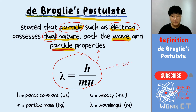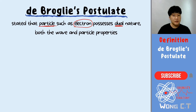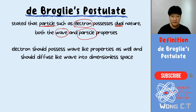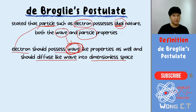We are not going to do any calculations, so don't worry about the formula — we are going to understand the postulate only. In Bohr's atomic model, we agree the electron is a particle. When the electron is a particle, it must have the dual nature properties — wave and particle. What de Broglie is trying to explain is that when the electron possesses a wave-like property, it should diffuse like a wave into a dimensionless space.